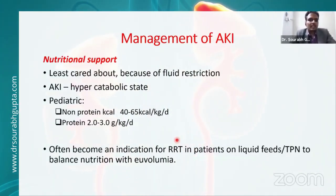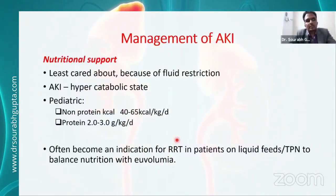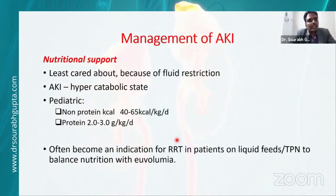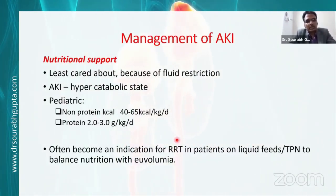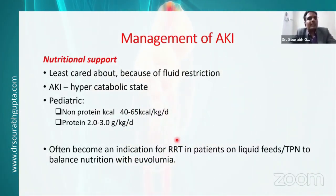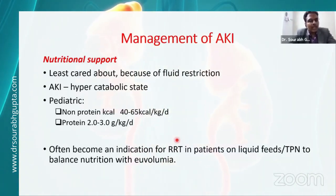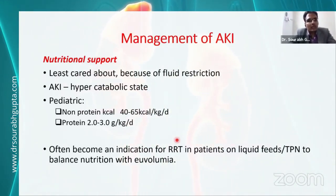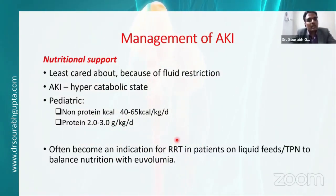Nutrition is the least cared-for aspect in AKI management. Acute kidney injury is a hypermetabolic state requiring up to 2 to 3 grams per kg per day of protein and non-protein calories of approximately 40 to 65 kcal per kg per day. However, the patient is on fluid restriction, making it difficult to provide this amount of nutrition. This actually becomes an indication for renal replacement therapy because if one has to provide adequate nutrition while balancing fluid in patients on liquid feeds and TPN, ultrafiltration may be needed.